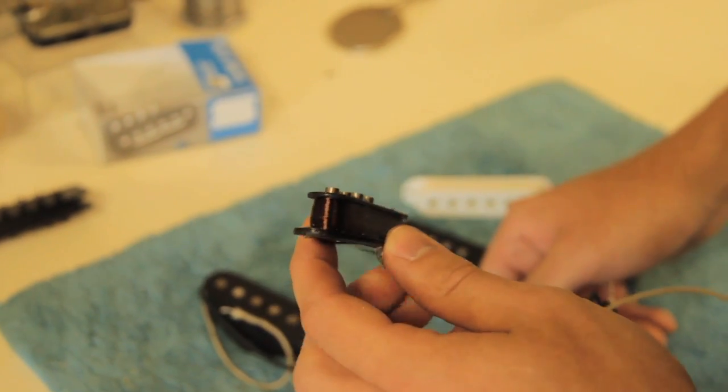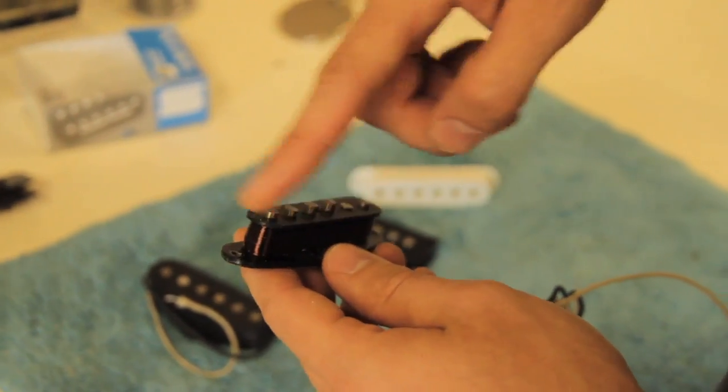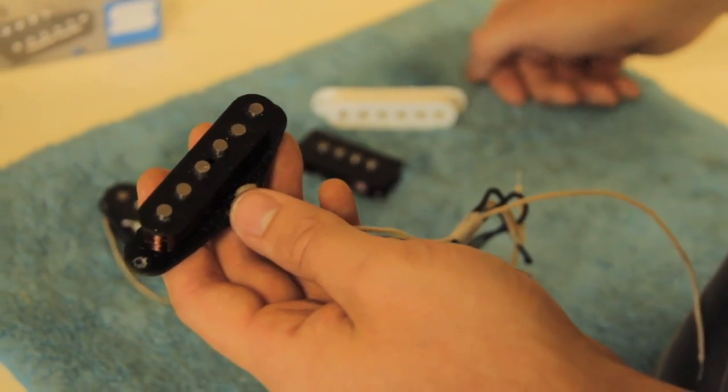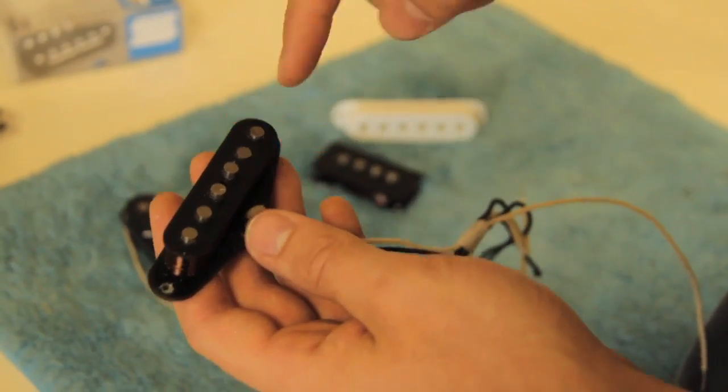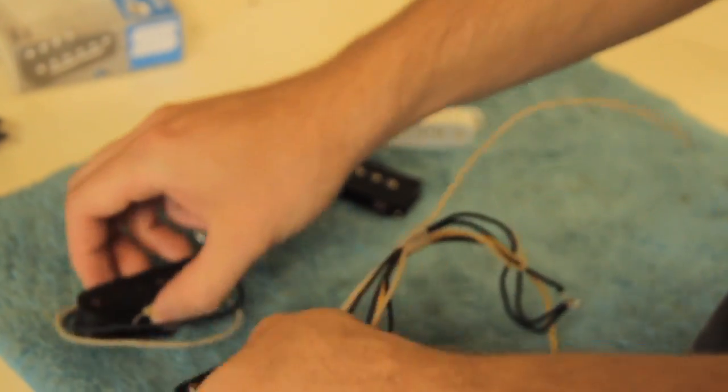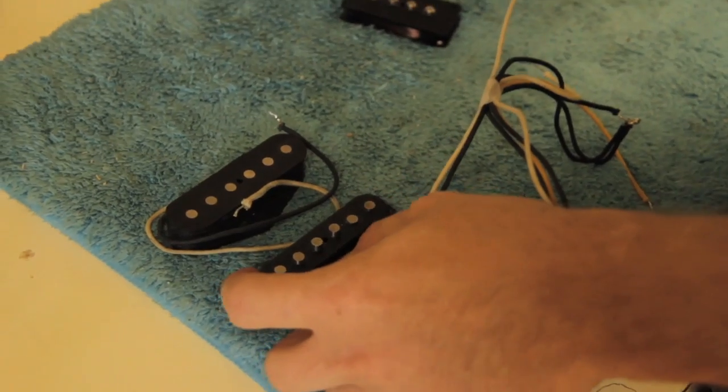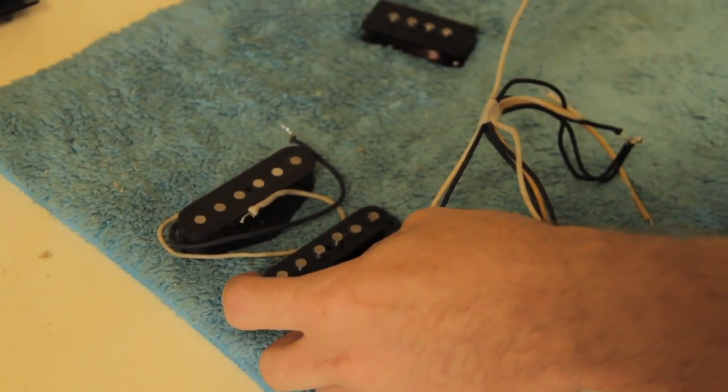This also controls which direction the current flows through the pickup. This produces phase. So if you have two pickups, and one current is going this way, and the other current is going that way, those two pickups are out of phase. They create a very thin, funky sound.